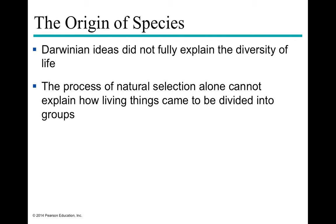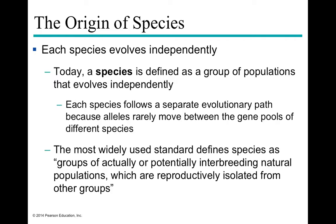We touched on Darwin in the last lecture, but some of the Darwinian ideas we presented did not fully explain the diversity of life. In fact, the process of natural selection alone is not quite enough to explain how living things are divided into so many different groups. Each species is subjected to independent selective pressure and therefore evolves independently. Each species follows a separate path evolutionarily speaking because alleles very rarely move between the gene pool of one species to another.